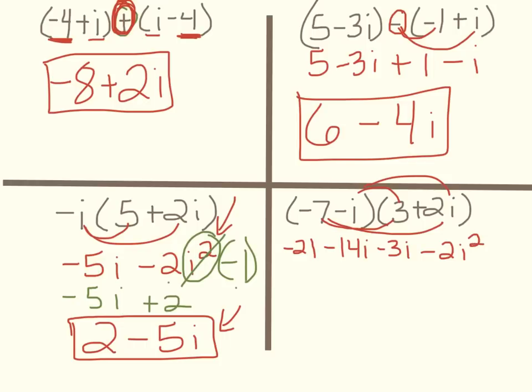And so, remember, take your i squared, cross it out, and write negative 1. So now I have negative 21. I'll go ahead and combine these. Minus 17i. And then negative 2 times negative 1 is plus 2. So my real part is negative 19, and my imaginary part is minus 17i.